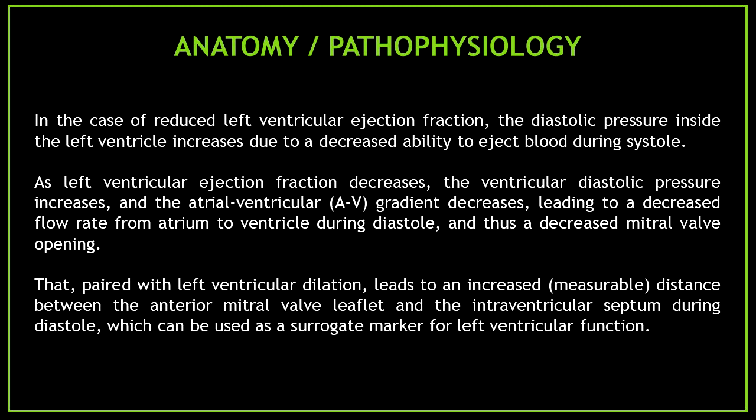This occurs early in diastole, and blood flow is further assisted by atrial contraction later in diastole. In a healthy individual, the atrial-ventricular gradient is sufficient to open the mitral valve and bring the anterior mitral valve leaflet in proximity or contact with the interventricular septum. In the case of reduced left ventricular ejection fraction, diastolic pressure inside the left ventricle increases due to decreased ability to eject blood during systole. As ejection fraction decreases, the ventricular diastolic pressure increases, the atrial-ventricular gradient decreases, leading to decreased mitral valve opening. Combined with left ventricular dilatation, this leads to an increased distance between the anterior mitral valve leaflet and the interventricular septum during diastole, which can be used as a surrogate marker for left ventricular function.